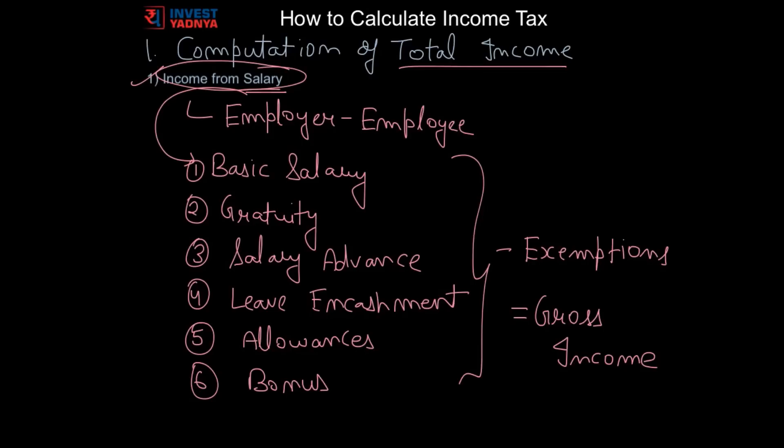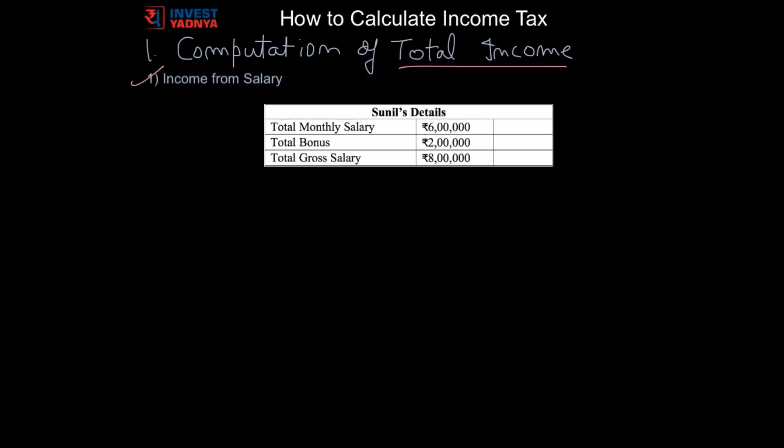Let's understand this better with an example. Let's take an example where Sunil gets rupees 6 lakhs per year as salary before tax and got rupees 2 lakhs before tax as bonus in the year end. So total salary received by him is rupees 8 lakh in the financial year before tax.